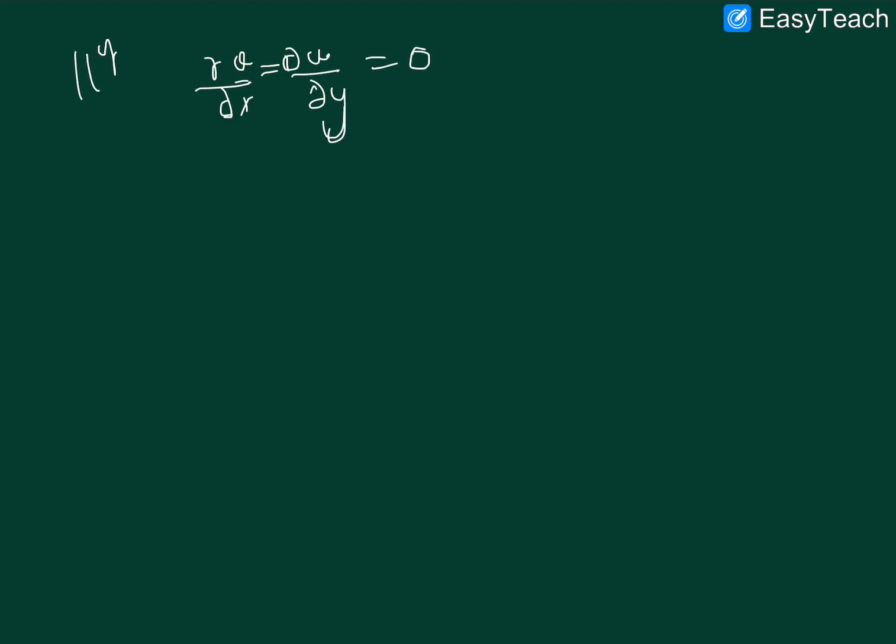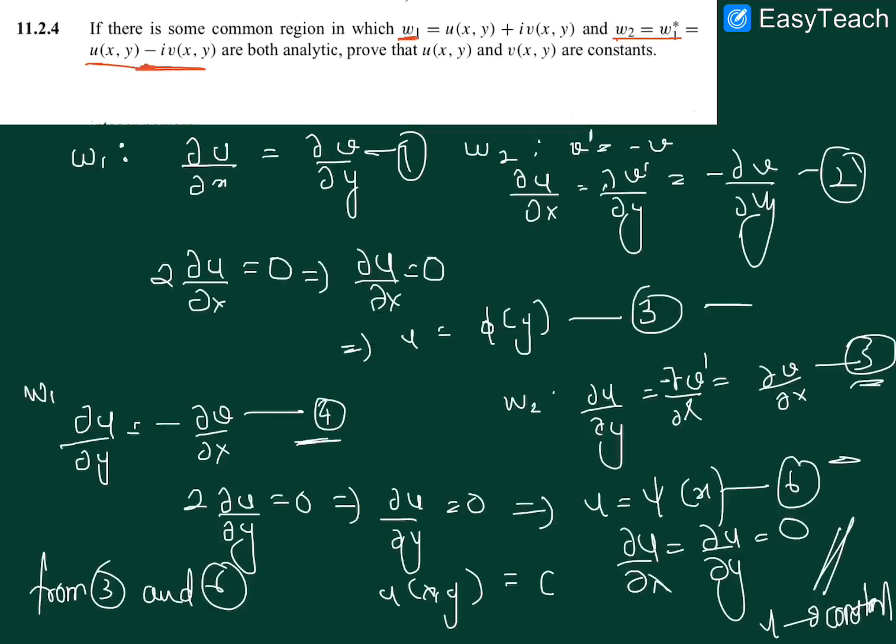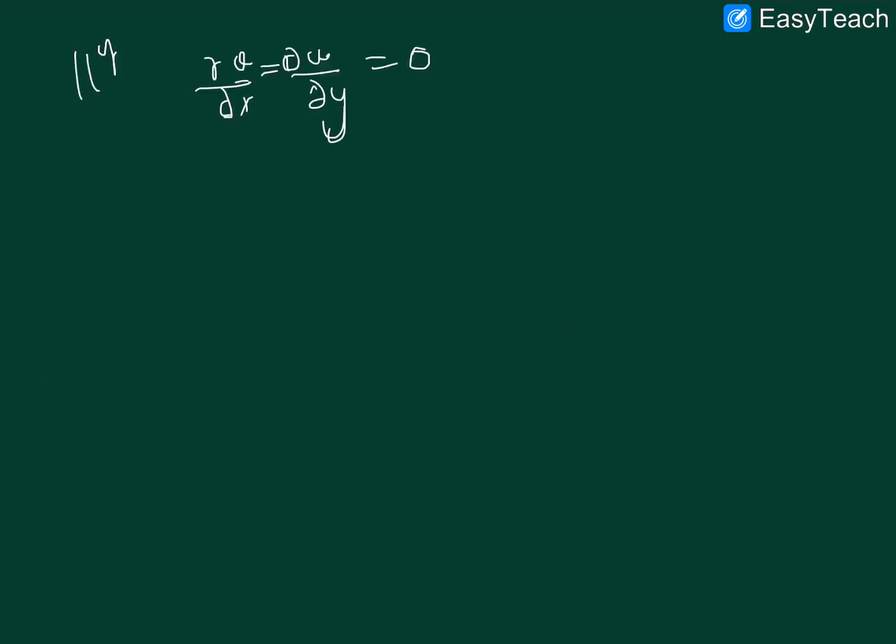Similarly we can say that dv by dx is equal to dv by dy is equal to 0. So if we integrate both of them we reach the same conclusion that it is neither function of x and y, so once again it reduces to a point where v is also a constant.